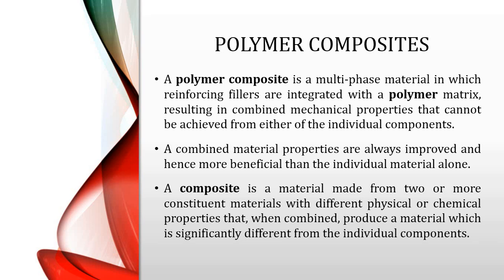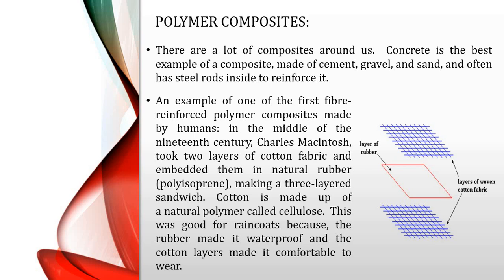Polymer composites are multiphase materials. They contain reinforcing agents as well as a polymer matrix. They have combined mechanical properties that cannot be achieved by the individual components. One of the best examples of composites is concrete, in which cement acts as a binder and steel rods act as reinforcing bars.